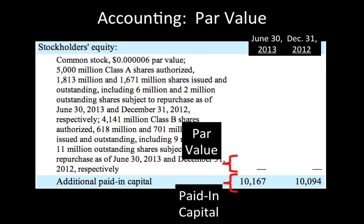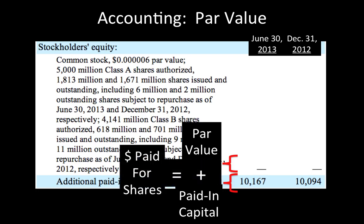In short, when a company issues common stock, the amount the company is paid is broken into two parts. The sum of par value and paid-in capital equals the cumulative amount paid for the company's stock.